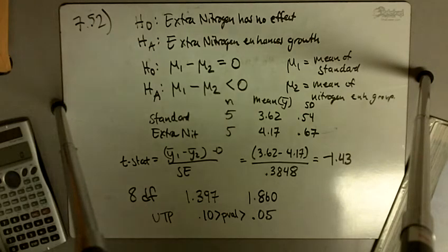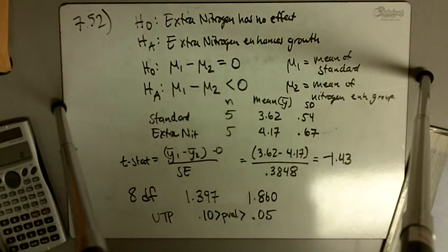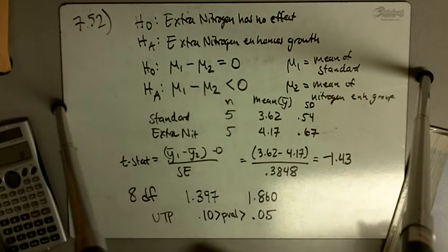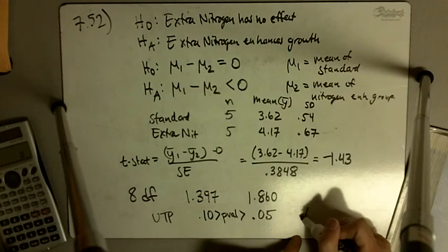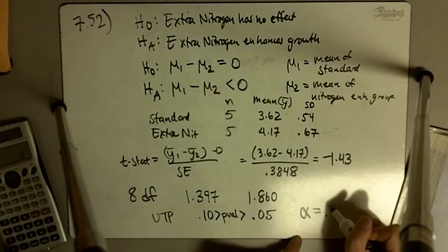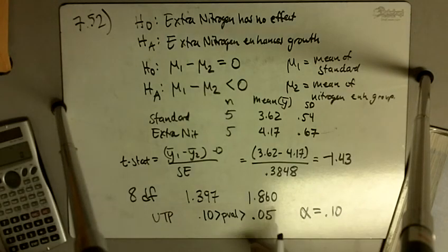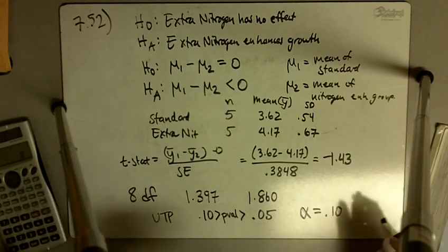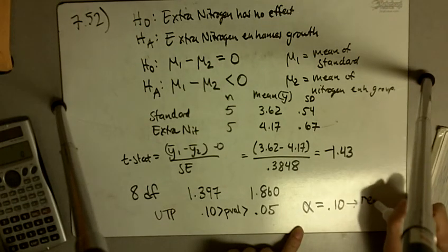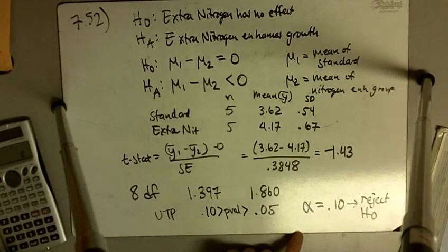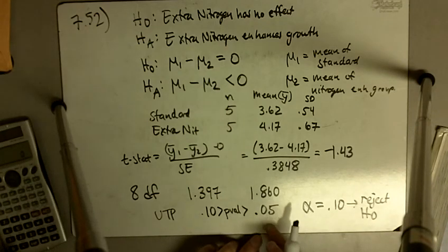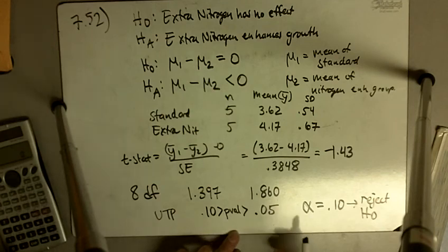We're going to use the t-test with alpha equal to 10%. So our p-value is in between 5% and 10%. This leads us to reject the null hypothesis. Now, if our alpha was 5%, then our p-value is bigger than 5%, and we would fail to reject the null hypothesis.